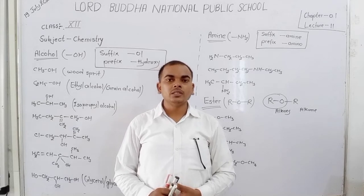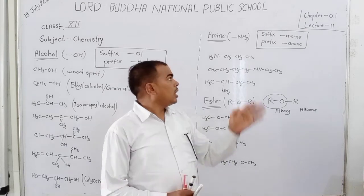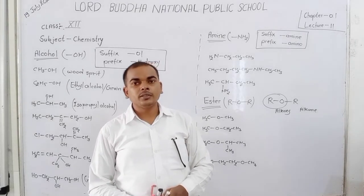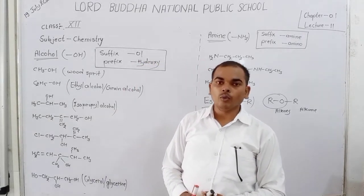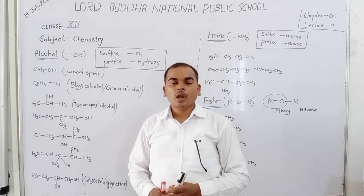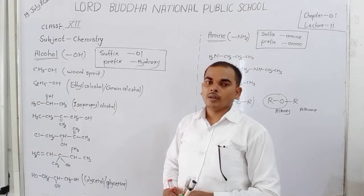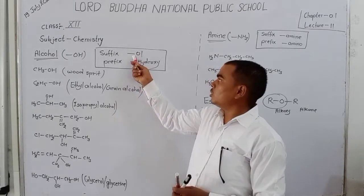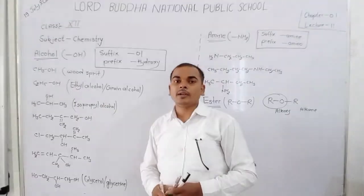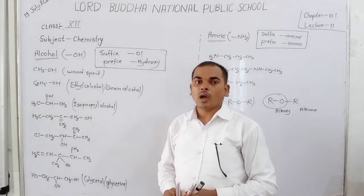Hi friends, today we will discuss in IUPAC nomenclature: alcoholic group, amines group, and ester group. Firstly we will discuss the alcoholic group. If in the parent carbon chain, the alcoholic group is present as a principal function group, then the suffix used for the alcoholic group is '-ol'. When the alcoholic group is treated as a substituent, write 'hydroxy' for the alcoholic group.